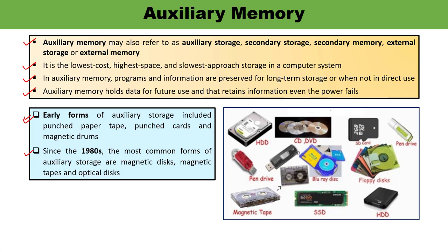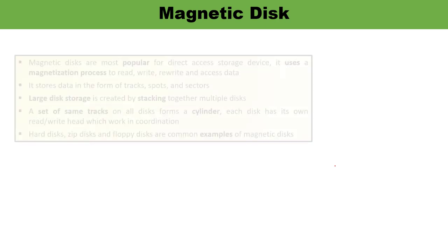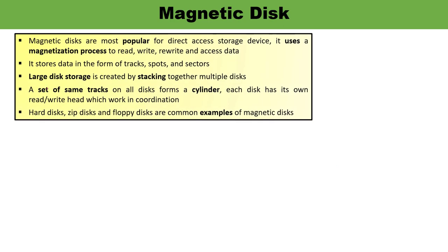Here in this particular image, you can see some forms of auxiliary memories. Now, coming to the magnetic disk — what is a magnetic disk? Magnetic disk, you must remember, is a surface device, meaning it stores data on its surface. These are also semi-random devices, and it is mainly used as a direct access storage device, because data can be stored, read, and written from the magnetic disk.